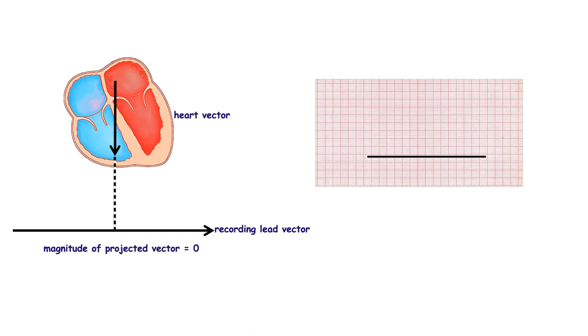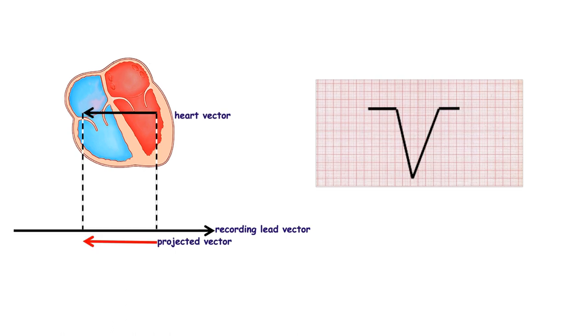If the direction is perpendicular to the axis of the lead, there is no deflection. If the direction of the heart vector is opposite to the axis of the lead, downward deflection is registered.